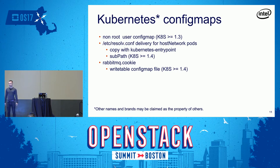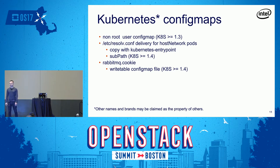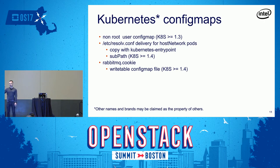Until Kubernetes 1.4, there was also a problem delivering the resolv.conf file to containers running with host network configuration. When mounting a ConfigMap, it would shadow all files in the directory — there was no way to mount just one file from /etc without shadowing everything else. With Kubernetes 1.4 and the introduction of the subpath mechanism, you can select just a single file from a ConfigMap and explicitly mount it as a single file on the filesystem.